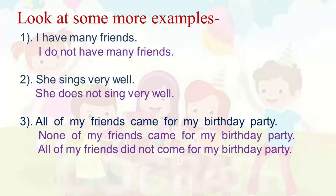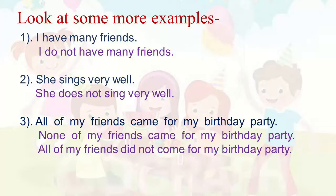Now please pay attention to these examples. The first is: I have many friends. How will we change this affirmative sentence into a negative sentence? If we say 'I have not many friends,' is this correct? No, it is not correct. The correct negative sentence is: I do not have many friends. We know that 'do' is used when the subject is I, you, we, and they. So we added 'do not' to make it a negative sentence.